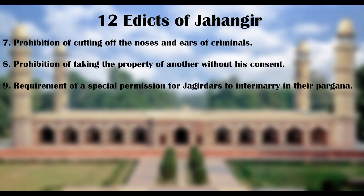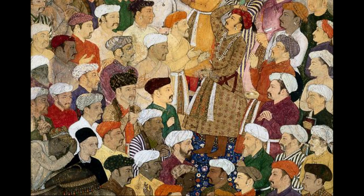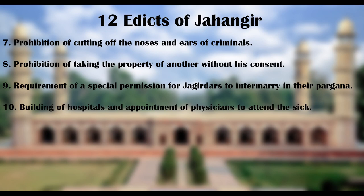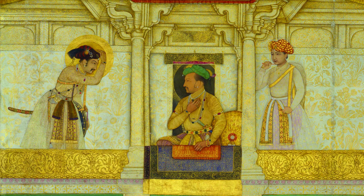9. Requirement of special permission for Jagirdars to intermarry in their pargana. This order maintained that a government collector or Jagirdar should not, without the permission of the emperor, intermarry with the people of the pargana or district in which he might be assigned to. 10. Building of hospitals and appointment of physicians to attend the sick. Jahangir ordered that his subjects should found hospitals in the great cities and appoint physicians for the healing of the sick. Whatever the expenditure might be should be given from the royal treasury.